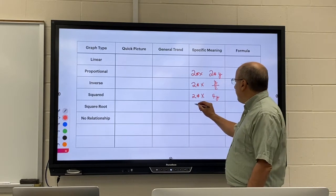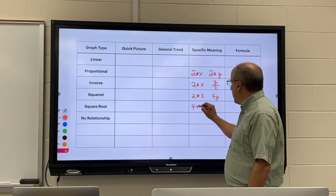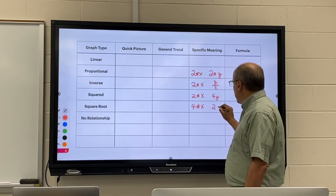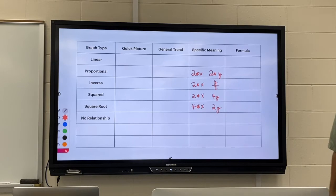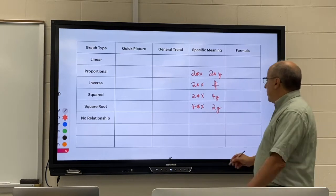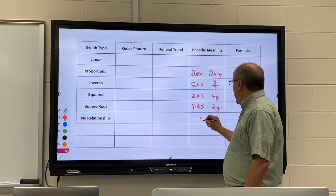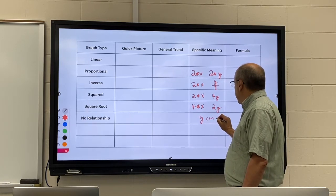A square root graph means that you need to do four times the X in order to double the Y. And a no relationship graph means Y is constant.